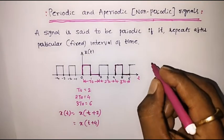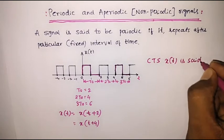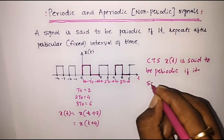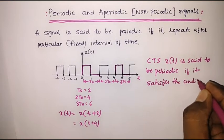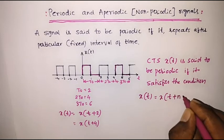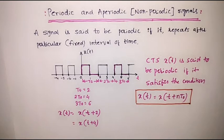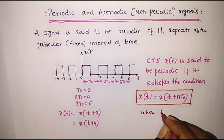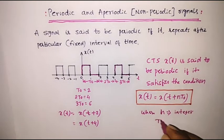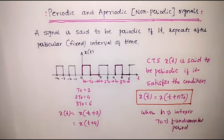Now I can say any continuous-time signal x of t is said to be periodic if it satisfies the condition: x of t is equal to x of t plus n·t0, where n is an integer and t0 is known as the fundamental period. That is, n takes values 1t0, 2t0, 3t0, and so on, and t0 is the fundamental period.